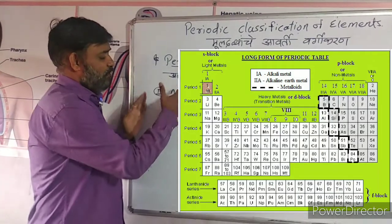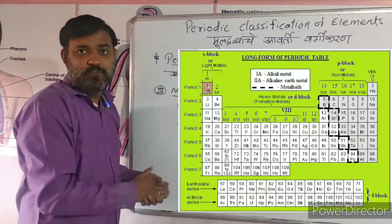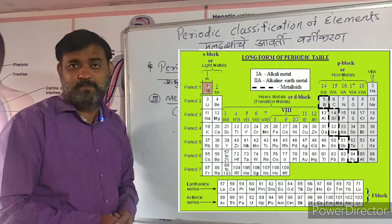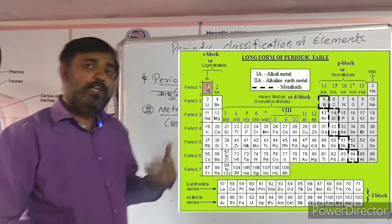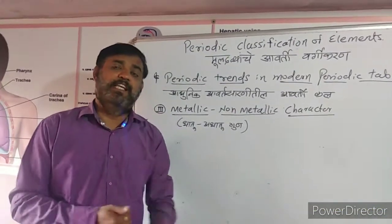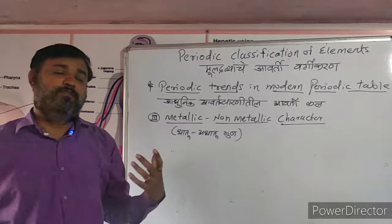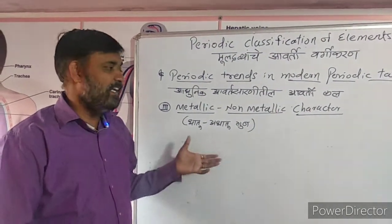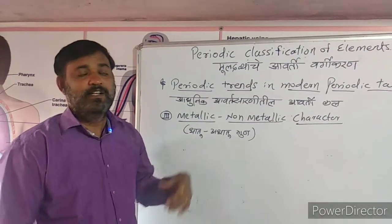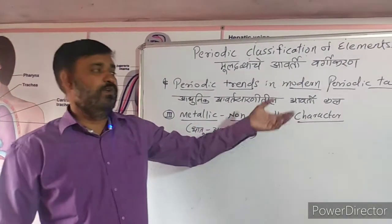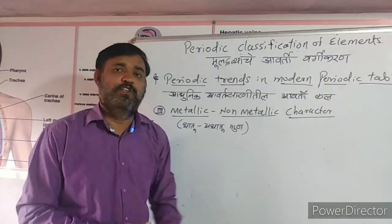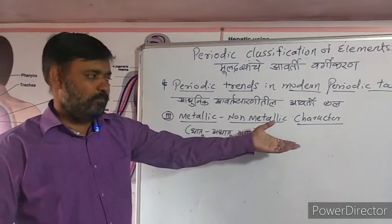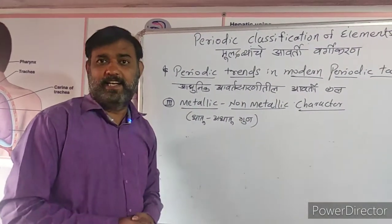Why is this so? If we observe the left-hand side, the atomic structures of lithium, sodium, potassium, beryllium, magnesium, and calcium show they have one, two, or three electrons in their last orbit. To gain a stable structure, they easily donate those electrons — and therefore metallic character is found on the left side. On the right-hand side, elements have five, six, or seven electrons in their last orbit, so they accept electrons and hence show non-metallic character.